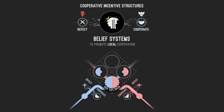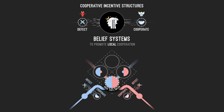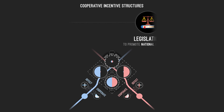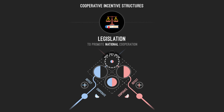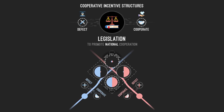Fortunately, we developed more effective incentive structures that helped promote cooperation on a larger scale. Now, cooperative incentives are imposed by modern legislation, which penalizes citizens for their defective behavior — for example, by sending them to jail — and rewards citizens for their cooperative behavior. This works great to promote cooperation on a national scale, but once again this incentive structure meets some boundaries.